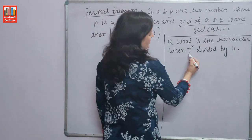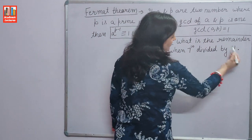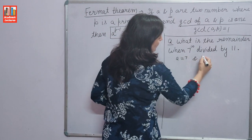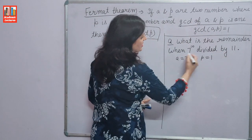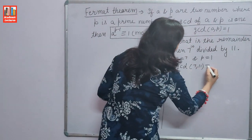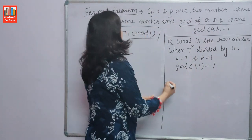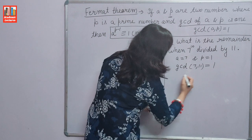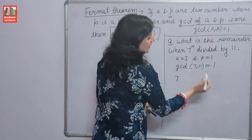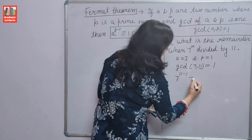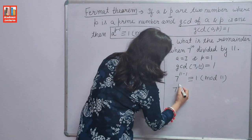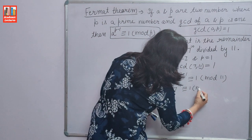So using Fermat's theorem, first we will check GCD of 7 and 11. Here the two numbers are A and P. Value of A is 7 and value of P is 11. GCD of 7 and 11 is 1, then we can apply Fermat's theorem. A raised to the power P minus 1: A is 7, so 7 raised to the power 11 minus 1 is congruent to 1 modulo P, i.e., modulo 11. So 7 raised to the power 10 is congruent to 1 modulo 11.